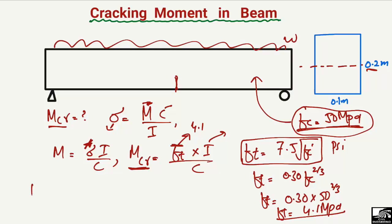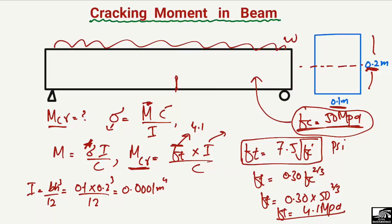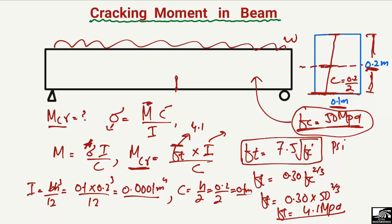Now we find the moment of inertia I for the beam cross-section using I = BH³/12. With width B = 0.1 m and height H = 0.2 m: I = 0.1 × (0.2)³ / 12, which gives I = 0.0000667 m⁴, approximately 6.67 × 10⁻⁵ m⁴. The distance C is from the neutral axis to the tension fiber. Since we are interested in the tension portion, C = H/2 = 0.2/2 = 0.1 m.